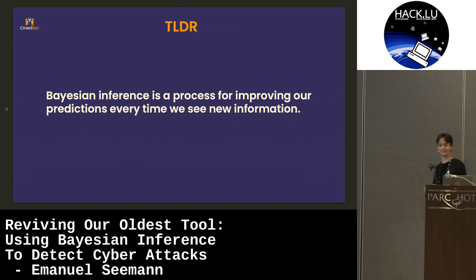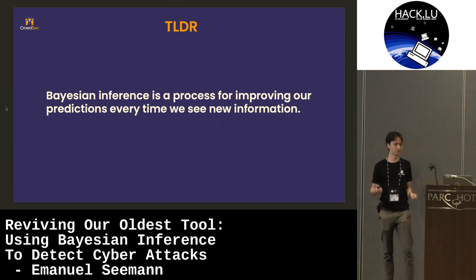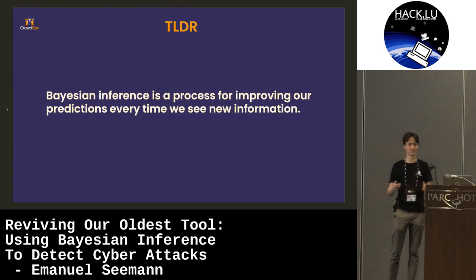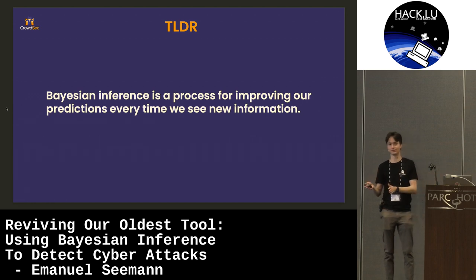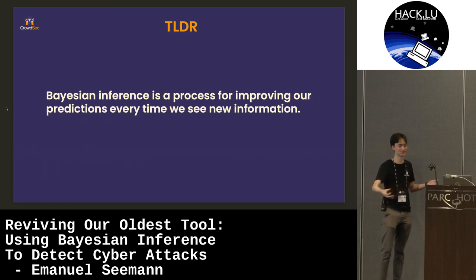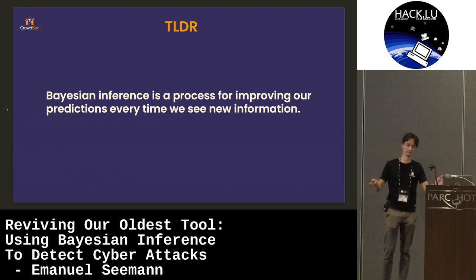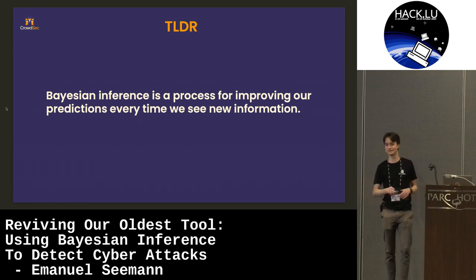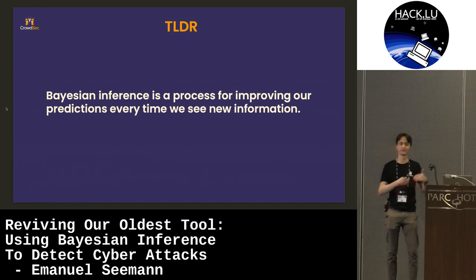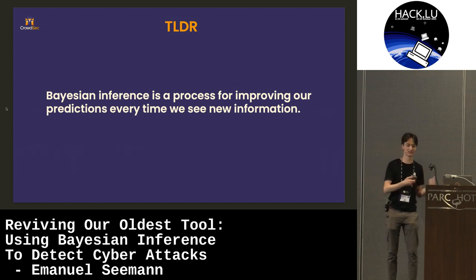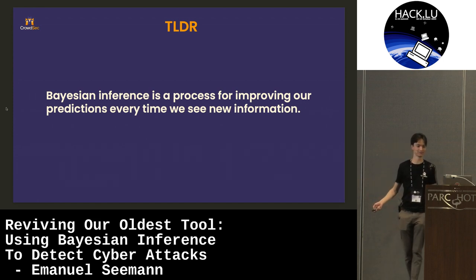TLDR: Bayesian inference is a process for improving our predictions every time we see new information. So if we see a new word contained in the email, we can say it's now gotten sketchier or it's gotten less sketchy.